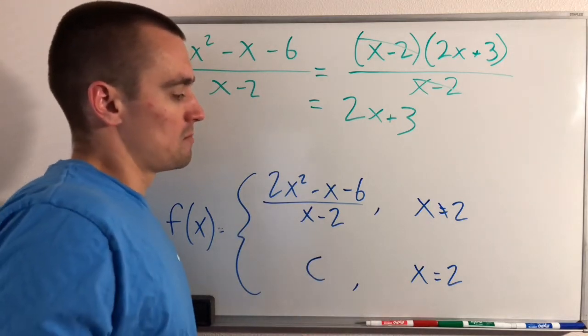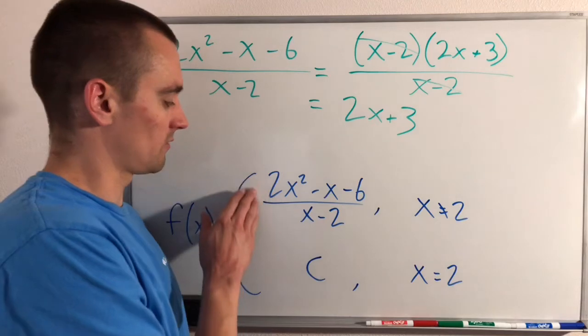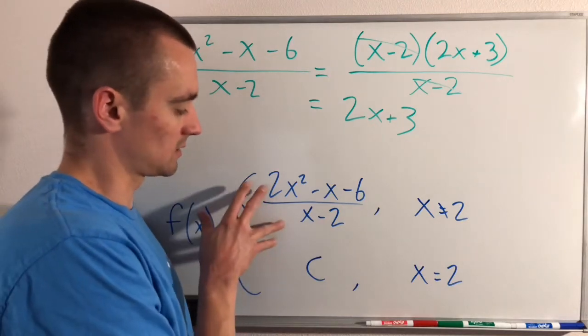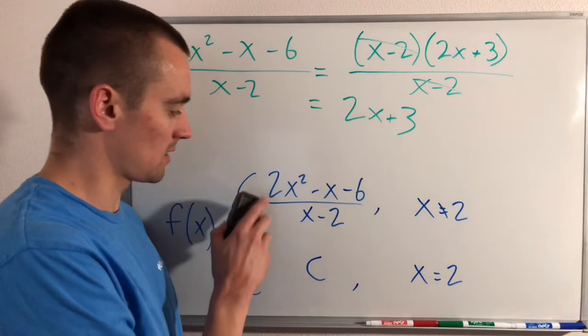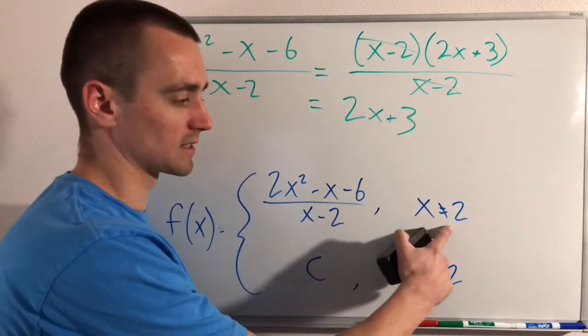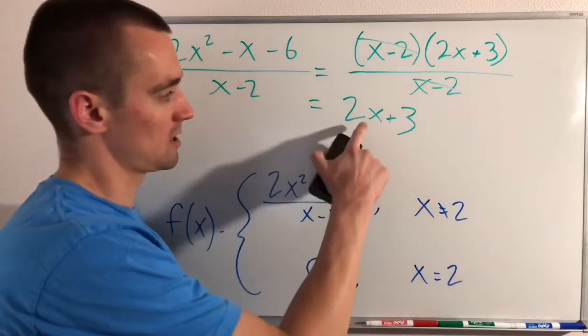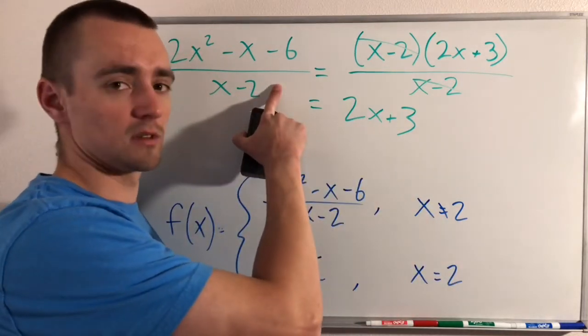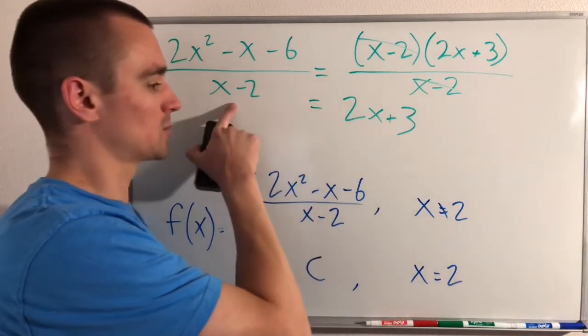So basically, instead of thinking of this piecewise function as being defined as this, we can actually say that it is instead 2x plus 3 for all x's that are not equal to 2. Because we know that 2x plus 3 equals this fraction here, except when x equals 2.